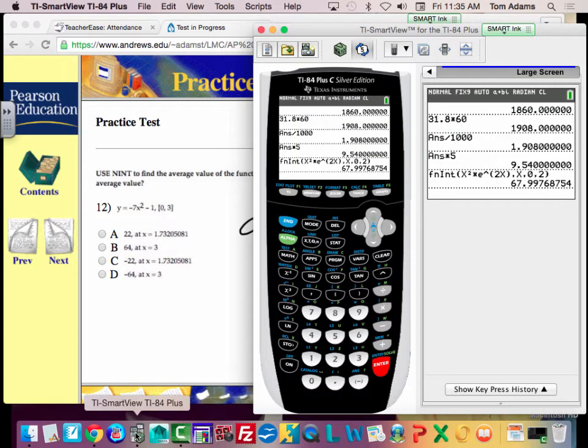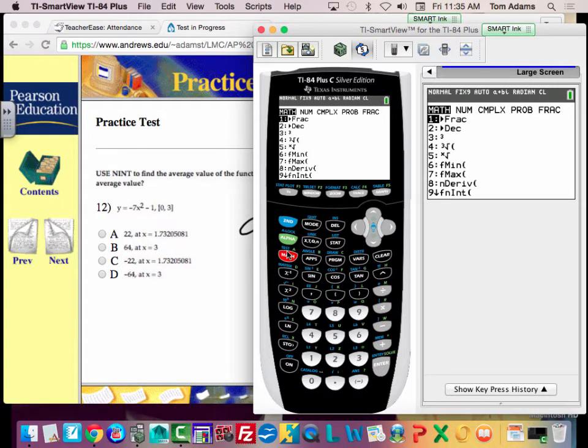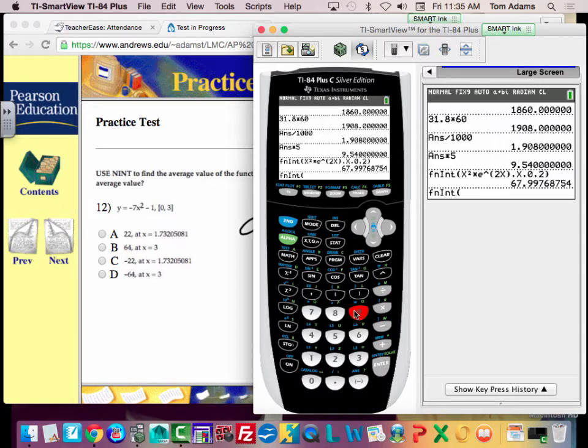So then what I need to do is I'm going to find, if I do math, option number 9, plug in my function negative 7x squared. Oops, I always do that. Minus 1, comma with respect to x, lower boundary 0, upper boundary 3.